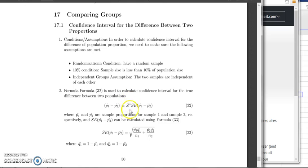And how do you get the standard error? The standard error is calculated by using this formula: the square root of P1 hat, Q1 hat over N1 (this is sample size for sample 1) plus P2 hat, Q2 hat over N2 (N2 is the sample size for sample 2).